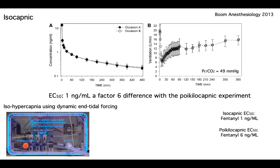We performed fentanyl studies under isohypercapnia — we increased the pCO2 to a fixed elevated level. It's very demanding. In the pharmacokinetic-pharmacodynamic model, we find that the potency of the opioid has increased by a factor of six, because now the EC50 is 1 nanogram per ml.